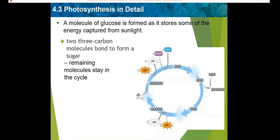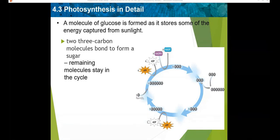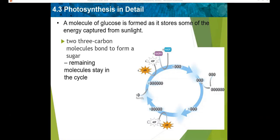Photosynthesis also provides materials for plant growth and development. The simple sugars from photosynthesis are bonded together to form complex carbohydrates such as starch and cellulose. Starch stores sugars until they are needed for energy, and cellulose is a major part of plant structure. Photosynthesis also helps regulate Earth's environment — the carbon atoms used to make sugar molecules come from carbon dioxide gas in the air, so photosynthesis removes carbon dioxide from the atmosphere.